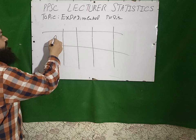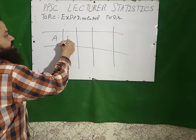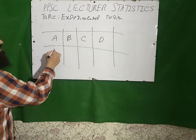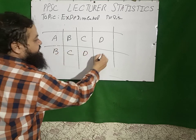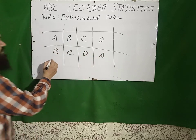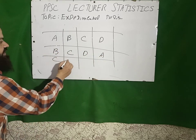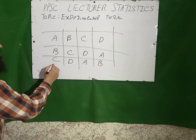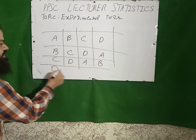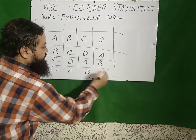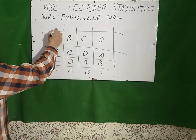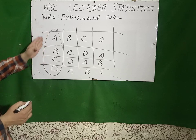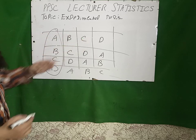For example, we have treatment A, B, C, D. Then B, C, D, A. Then C, D, A, B. Then D, A, B, C. You can check there is no repetition of the treatment in every column and row also.